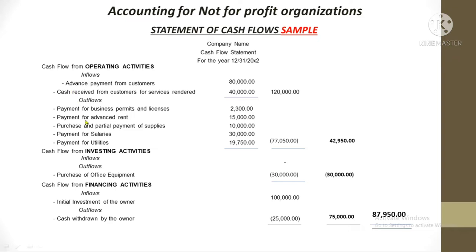The investing activities section generally contains two things. First, cash related to non-current assets — like buying equipment, land, or a building to be used by the organization. That would be an outflow. If you sell old equipment because you want to buy a new one, the cash proceeds become part of the cash inflows in the investing activities section.